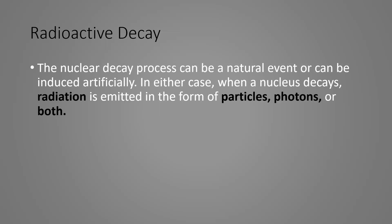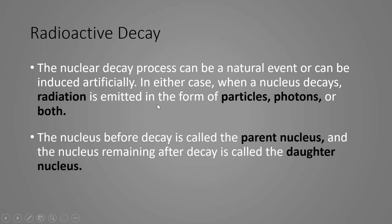So radioactive decay happens naturally or humans can induce it artificially. In either case, the nucleus decays and radiation or energy is emitted in the form of particles, photons, or both. Think of radioactive particles and photons as a particle or packet of light. The nucleus before it's decayed is going to be called the parent. The nucleus after is called the daughter. I guess they can only have daughters, but it's an easy way to remember: before decay we call the nucleus the parent, and after decay we call it the daughter.